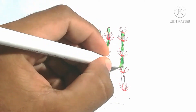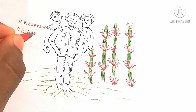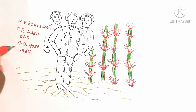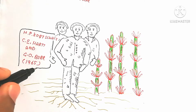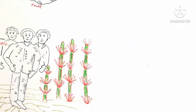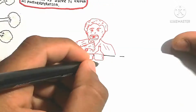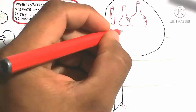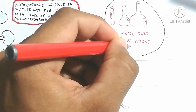C4 plants were discovered by H.P. Kortschak, C.E. Hartt, and G. Burr in 1965, from sugarcane. The feeling of the taste of sugarcane during night time is malic acid, because malic acid is stored in the mesophyll cell.